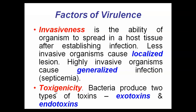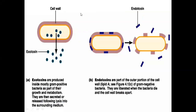Another virulence factor is toxigenicity. Bacteria can produce two types of toxins: exotoxins and endotoxins. As the name suggests, exotoxins are released to the outside — exo means outside. The toxins are produced inside the bacterial cell and released into the surrounding environment. That is why these toxins are called exotoxins. They are mostly produced by gram-positive bacteria as part of their growth and metabolism, and can be released by following lysis into the surrounding environment.